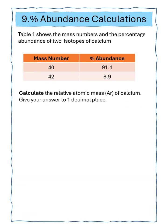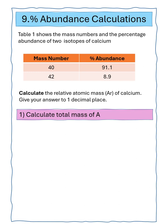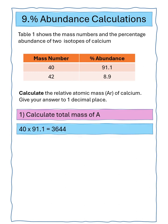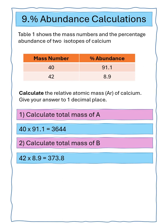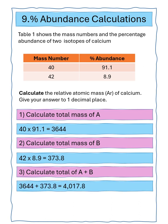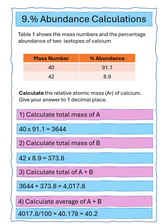Question nine says table one shows the mass numbers and percentage abundance of two isotopes of calcium. We've got to calculate the relative atomic mass of calcium, giving our answer to one decimal point. Isotope A: mass 40, abundance 91.1%, gives a total of 3644. Isotope B: 42 times 8.9% gives a total of 373.8. Adding the two totals gives 4017.8. Dividing by 100 gives 40.178, and to one decimal place that's 40.2.